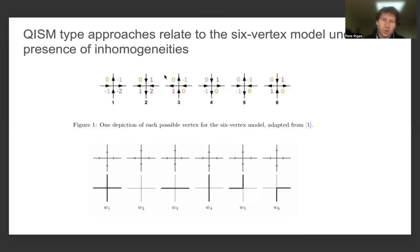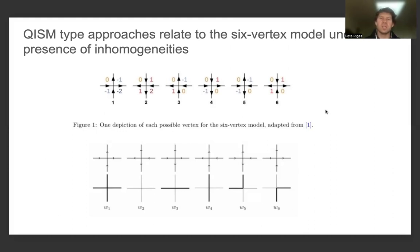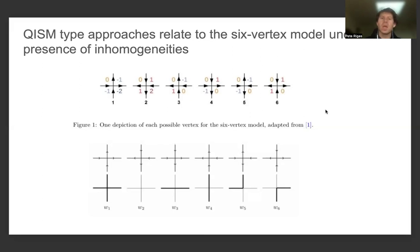The QISM type approaches relate to the six-vertex model under the presence of inhomogeneities. Here is our two-dimensional six-vertex model, and we also discussed in a previous presentation how the two-dimensional six-vertex model differs from the three-dimensional six-vertex model on the triangular lattice. Di Francesco provides different types of formulations for the weights depending upon a grouping of pairs of configurations of the three-dimensional six-vertex model into groups of two.